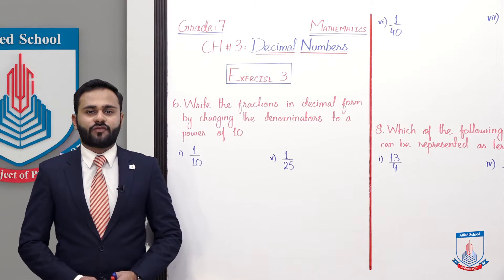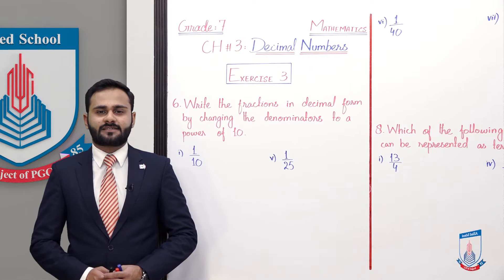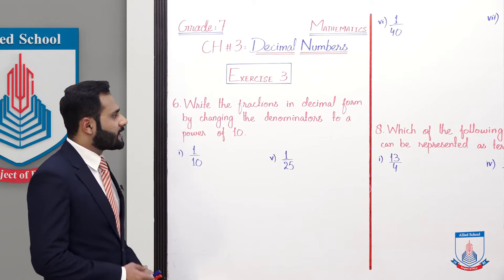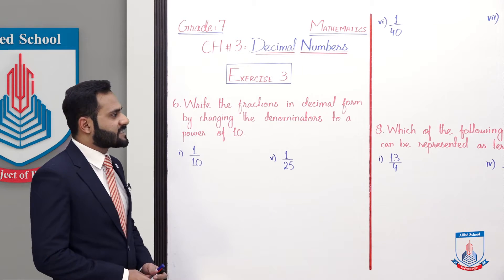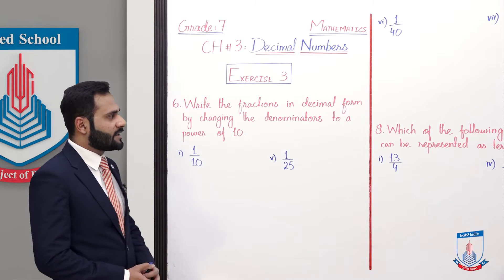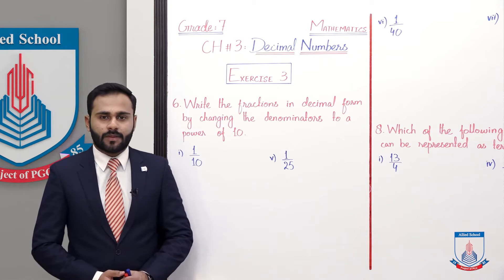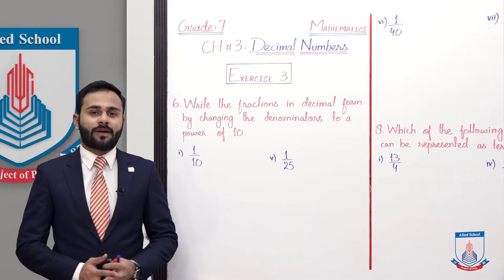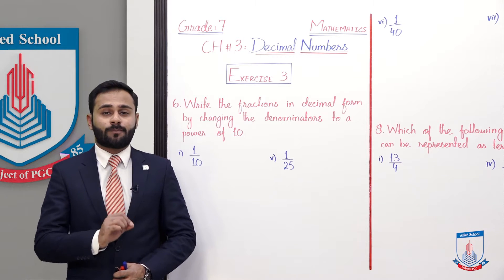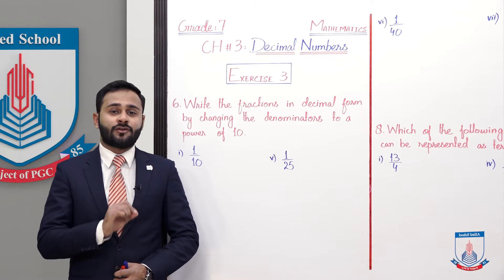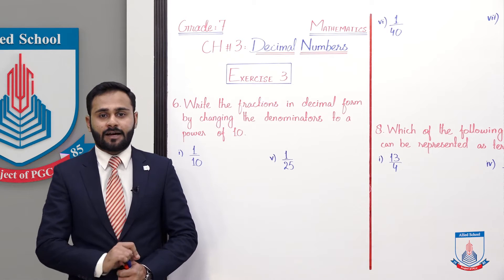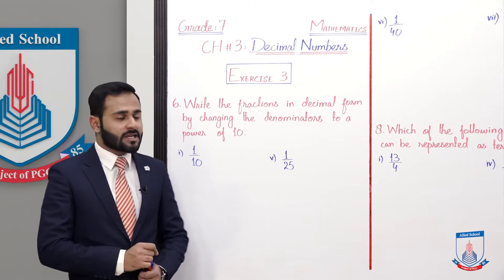Chapter number 3, decimal numbers, exercise 3, question number 6: write the fractions in decimal form by changing the denominators to a power of 10. Aapne in fractions ko decimal form mein convert karna hai aur denominator ki jo value hai woh basically 10 ki power mein lekar aana hai.